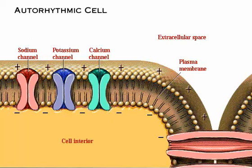The membrane potential is a result of the relative concentrations of ions along the inside and outside of the plasma membrane. If there are more positive ions outside the cell, then the inside of the cell is relatively negative, as shown here. If there are more positive ions inside the cell, then the inside of the cell is relatively more positive, as we will see shortly.